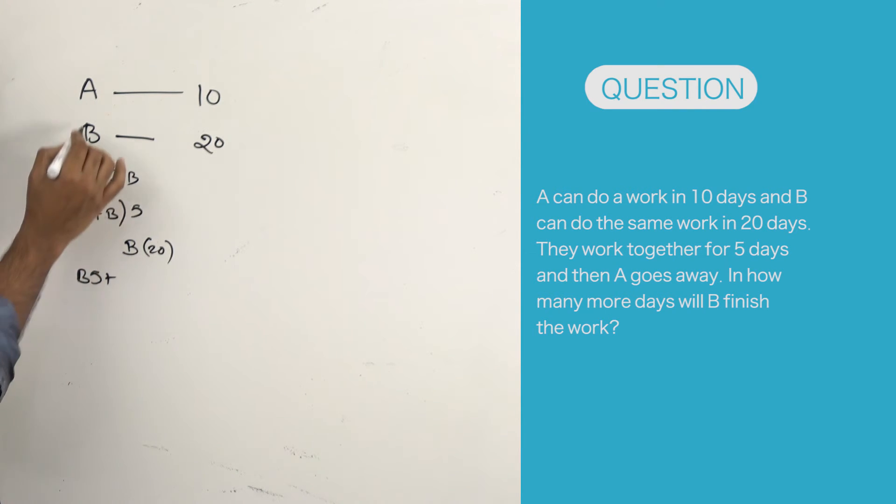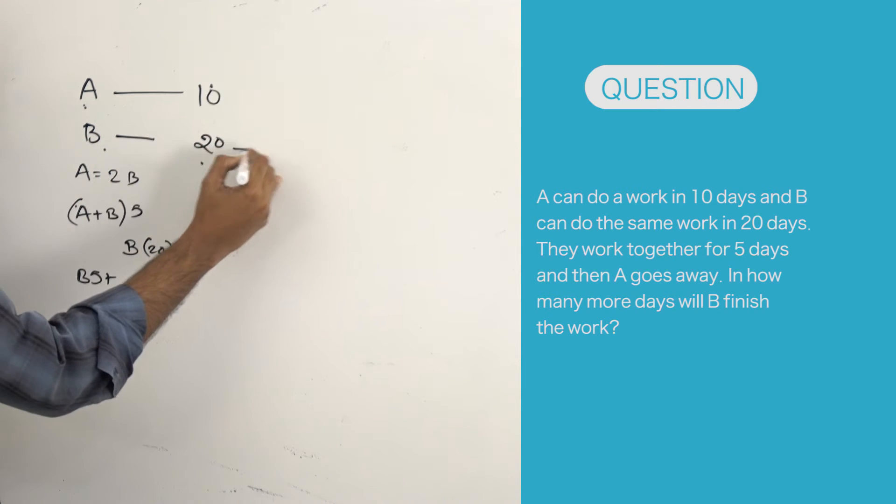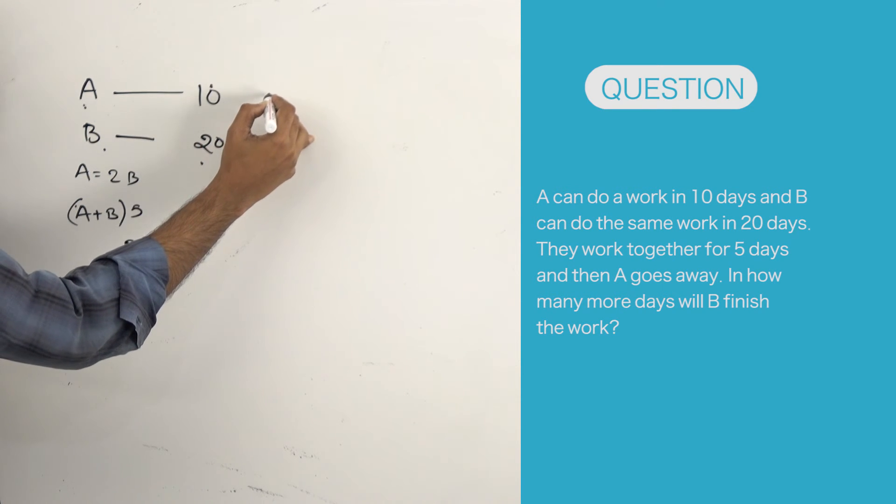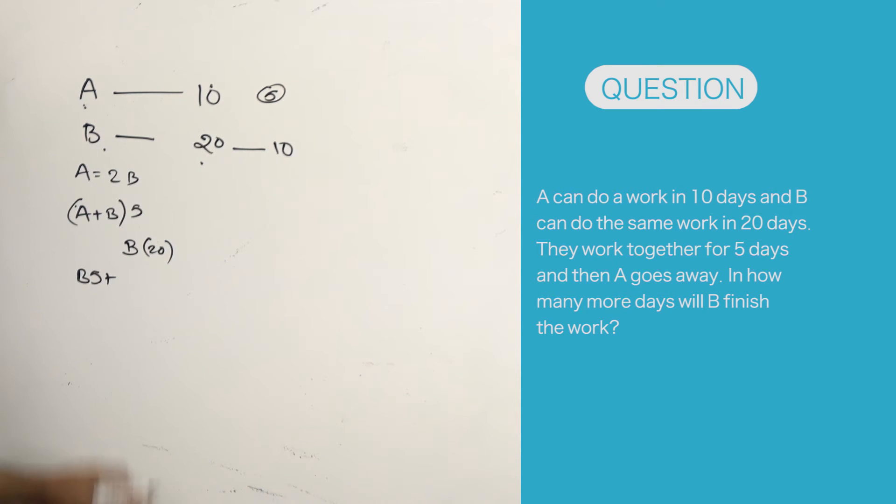I am writing B worked for 5 days. If A can do B's 20 days work in 10 days, B's 10 days work can be done by A in 5 days. So when A worked for 5 days, what is the actual work he did in terms of B? That is B's 10 days work.